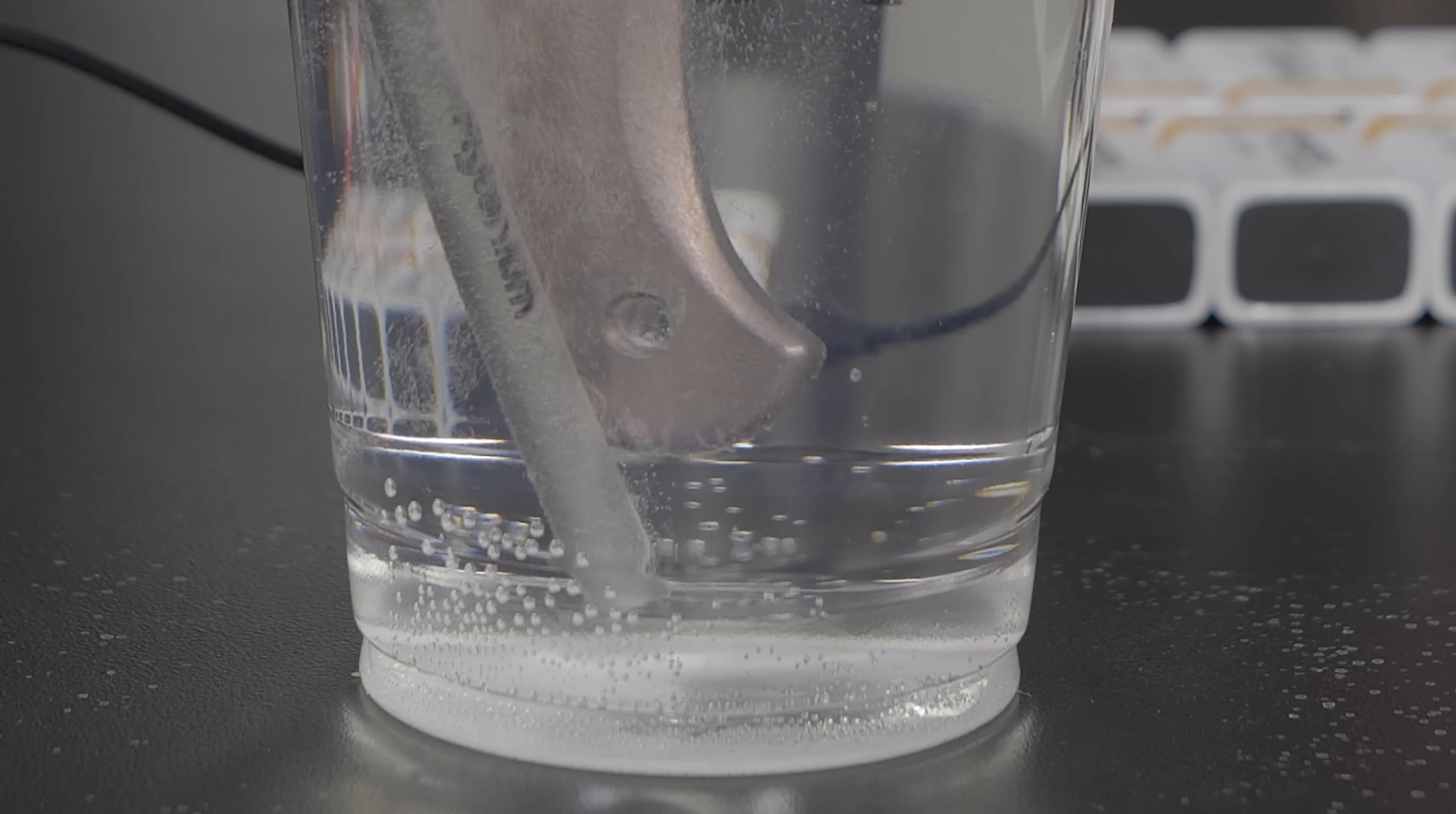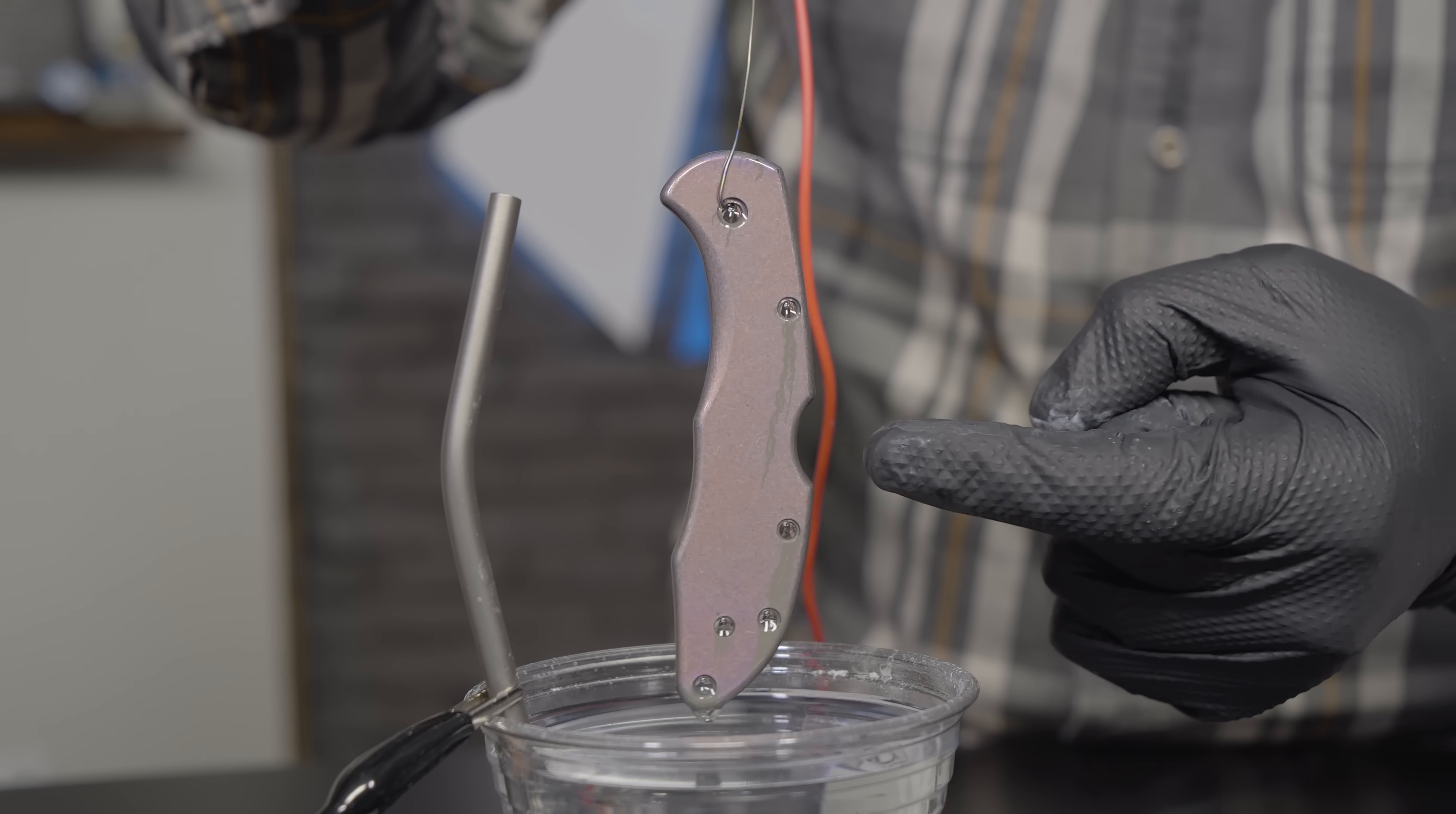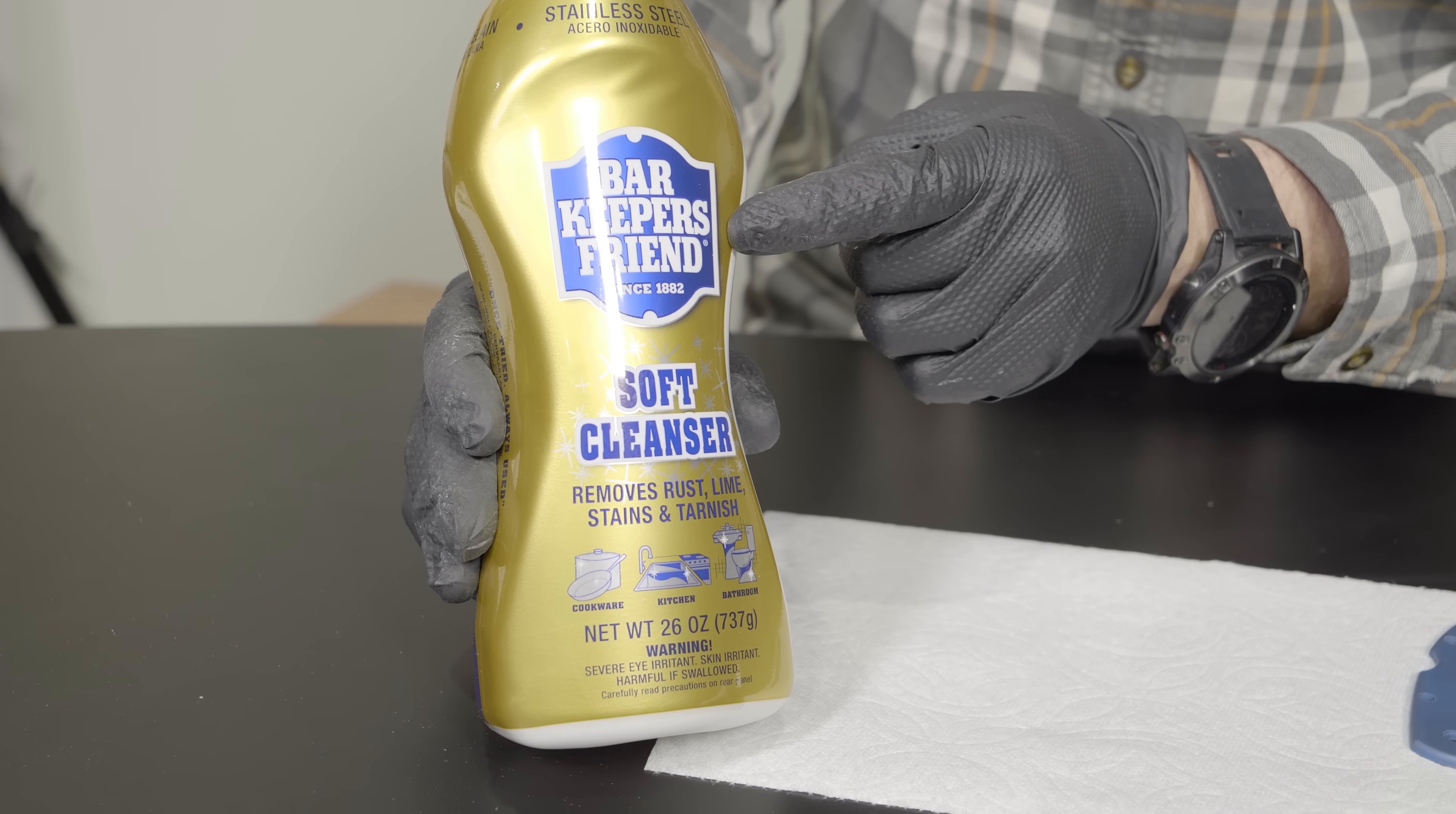Make sure when you're dipping your piece in your solution that you don't touch your ground. Otherwise, your titanium piece will get an arc spot on it. We can't stress enough how important it is to clean your titanium well, very very well. Otherwise, it'll end up looking like this. If your piece doesn't turn out how you want, you can remove the anodization using Bar Keeper's Friend and a little bit of elbow grease.